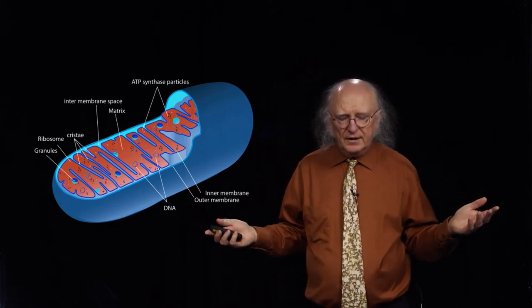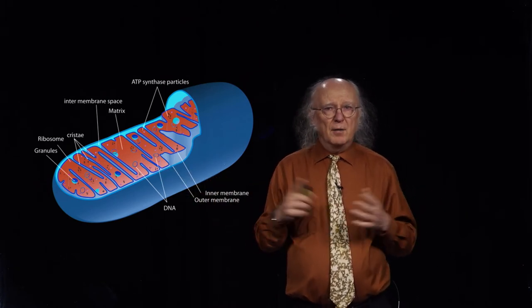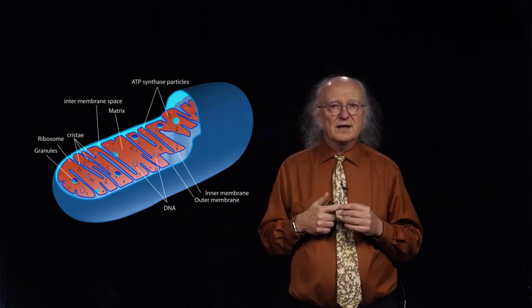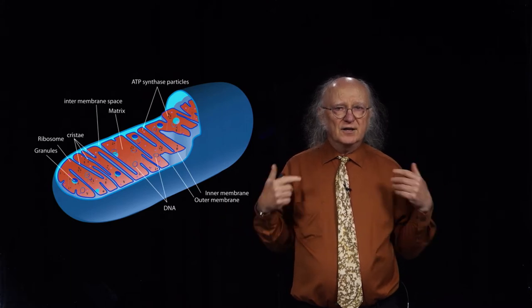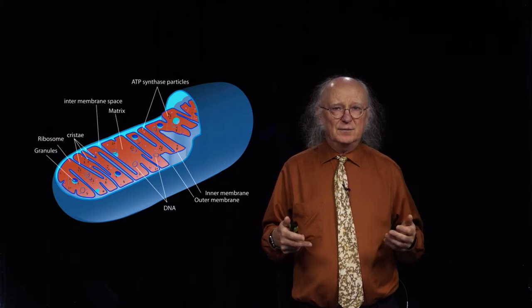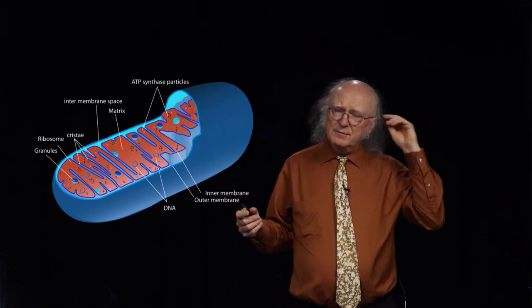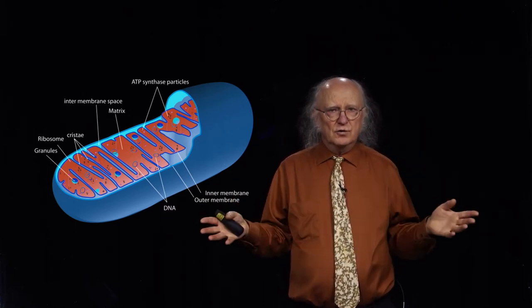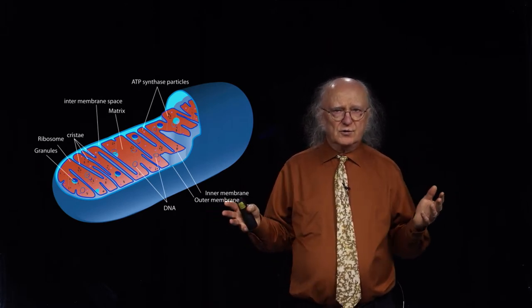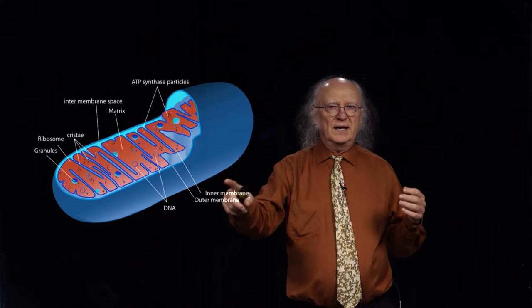We talk about the mitochondria in eukaryotic cells as the power plant of the cell. The reason mitochondria earn that name is because it's in the mitochondrion where probably 95 to 99% of the ATP that a cell uses is actually made. The mitochondrion has some important features you should recognize, including its overall general structure.